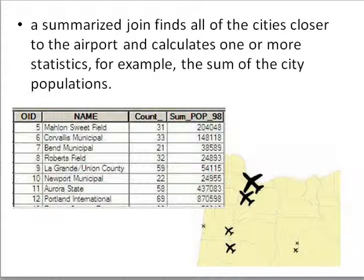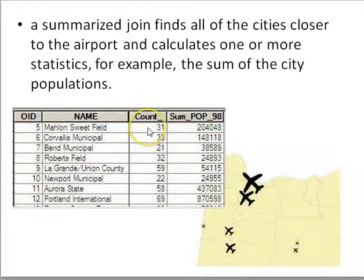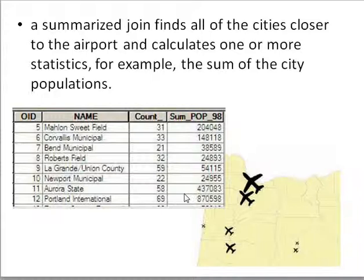Here's the result of that summarized join. It tells me there are 31 cities closer to McMinnville Airport than any other airport in the state, and 33 cities closest to Corvallis. I can also use this to summarize total population — getting the population sum for all 31 cities, or all 69 cities in Portland. A summarized join always gives me a count of how many features are near or within each particular destination feature.